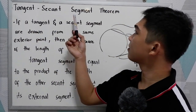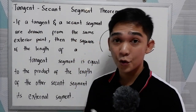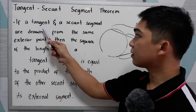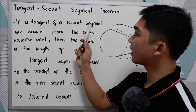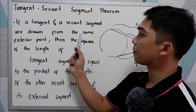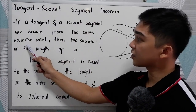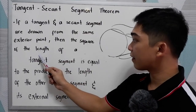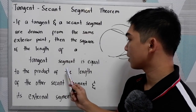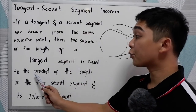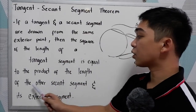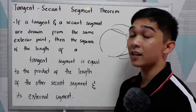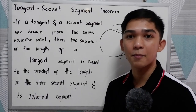Tangent-Secant Segment Theorem: If a tangent and a secant segment are drawn from the same exterior point, then the square of the length of the tangent segment is equal to the product of the length of the secant segment and its external segment.